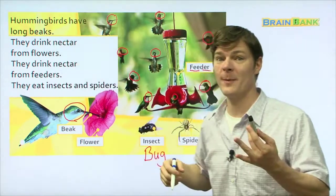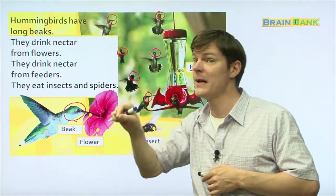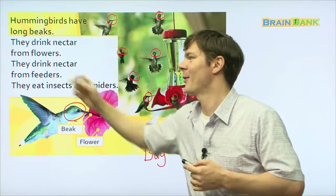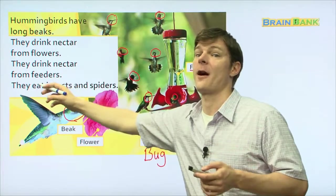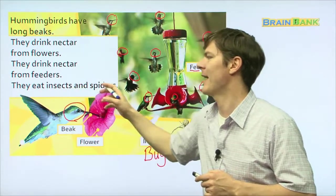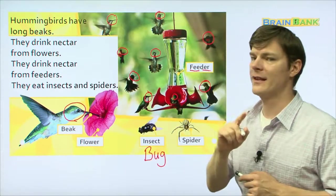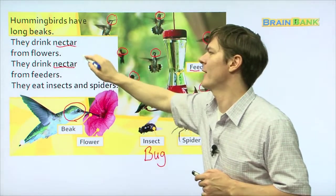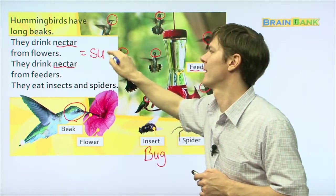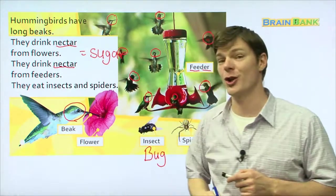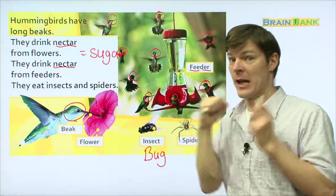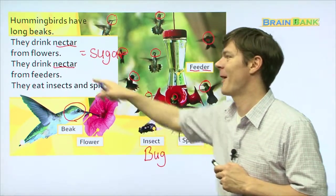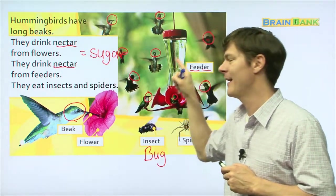Hummingbirds have long beaks. Read with me. Hummingbirds have long beaks. They drink nectar from flowers. They drink nectar from flowers. They drink nectar from feeders. They eat insects and spiders. So last thing before we go on to the next page, I want to make sure you understand this word nectar. Nectar is kind of like sugar. It's like sugar. And what happens when you eat sugar? You get a lot of energy, right? So hummingbirds need that energy and they get it from nectar in here, the feeder and in the flower.